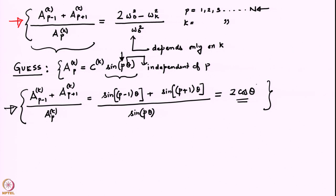The substitution gives us just cos(θ), and this tells us that sin(p·θ) is a correct guess provided θ is independent of p. Now, with that background, let us proceed further. We have to make sure that θ is independent of p, so θ can at most depend on k. And secondly, what is θ — what is the functional form of θ?